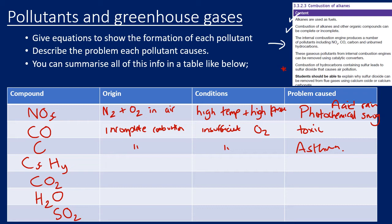Unburnt hydrocarbons are simply unburnt fuel that passes through the engine unreacted. The problems they cause include respiratory issues, and hydrocarbons can also be carcinogenic. As you can see, some pretty nasty things come out the back of a car, which is why you shouldn't stand behind cars or breathe in exhaust fumes.